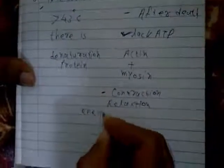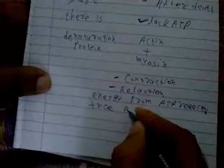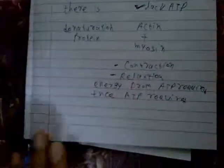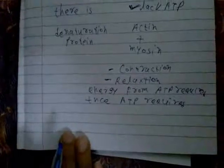For contraction — for binding between actin and myosin — energy from ATP is required. For relaxation, the presence of ATP is also required. So for contraction, energy of ATP is used; for relaxation, presence of ATP is required. This is the key concept.